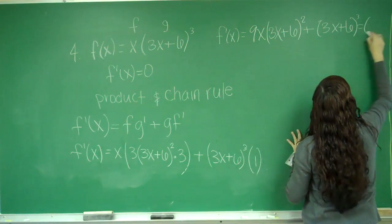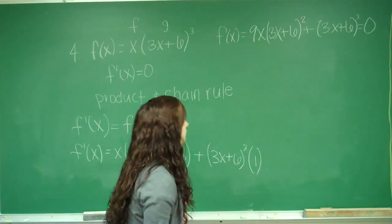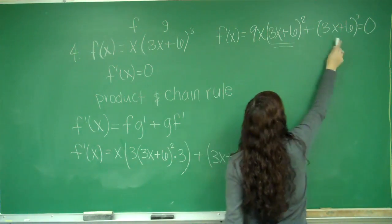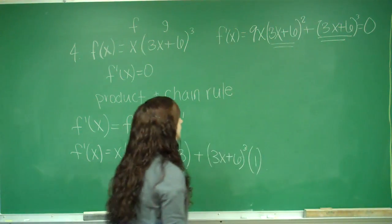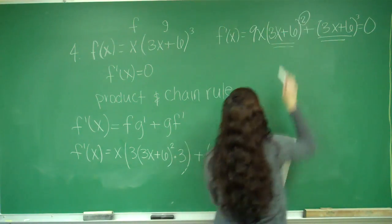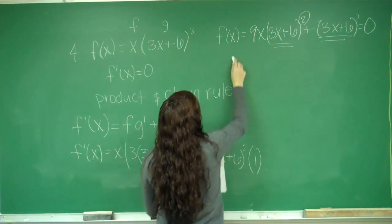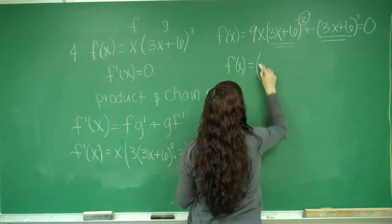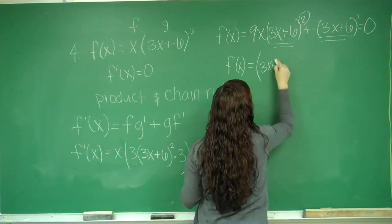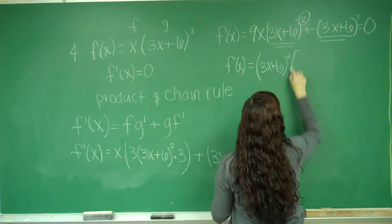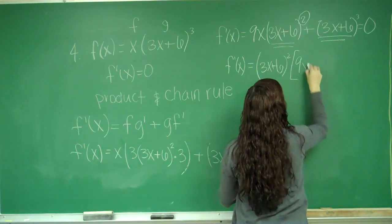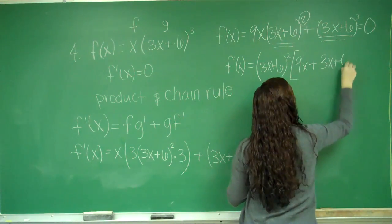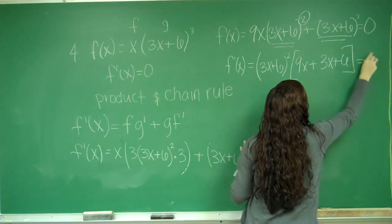And I want to set this equal to 0. So now all I have to do is solve for x. So I see that there's a 3x plus 6 in both terms, so I'm going to factor that out to the smallest exponent. So I'm going to factor out the square. So I'll have f prime of x equals (3x plus 6) squared times (9x plus 3x plus 6) equals 0.